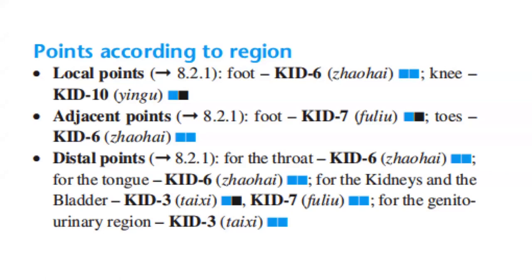For the local points of the foot, we have Kidney 6. For the knee, we have Kidney 10. For adjacent points in the foot, we have Kidney 7, and in the toes, we have Kidney 6.